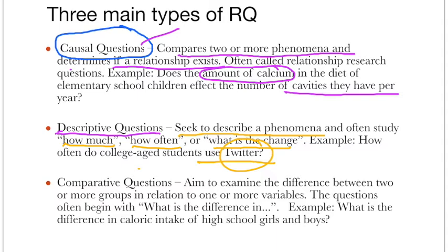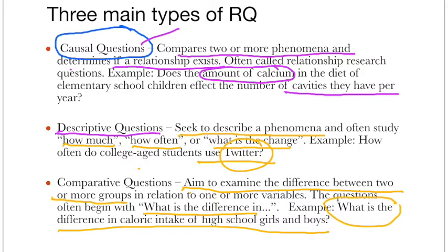Another type is the comparative question, which aims to examine the difference between two or more groups in relation to one or more variables. The question often begins with 'what is the difference in.' For example: what is the difference in calorie intake of high school girls and boys? If I'm framing a comparative question, I start my question with 'what is the difference.' For descriptive, we start with 'how,' and for causal, we frame a question comparing two things. You can see this in the slide.